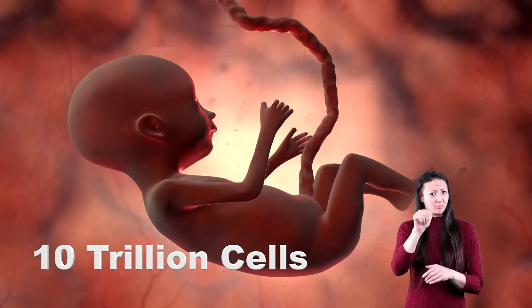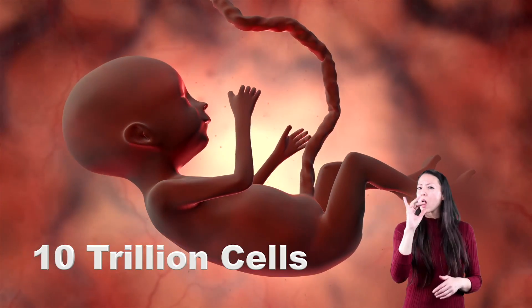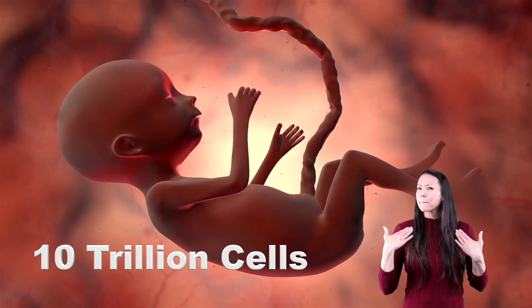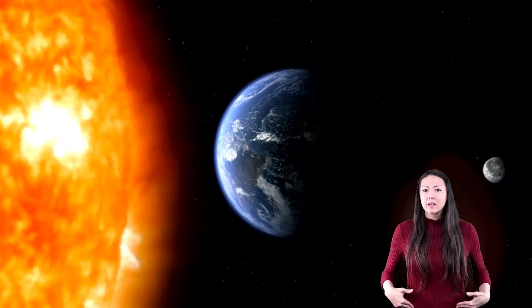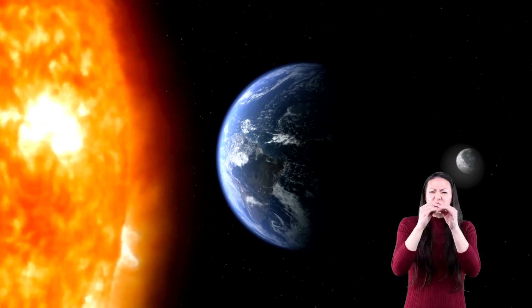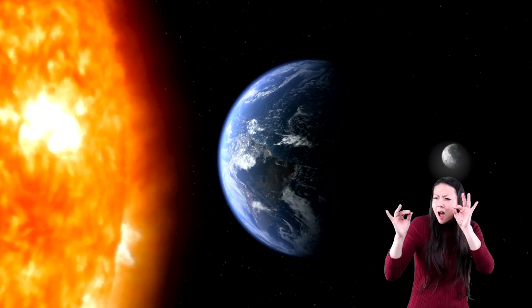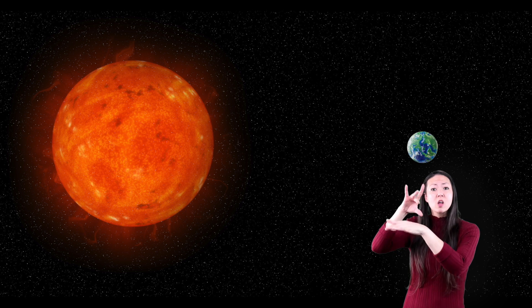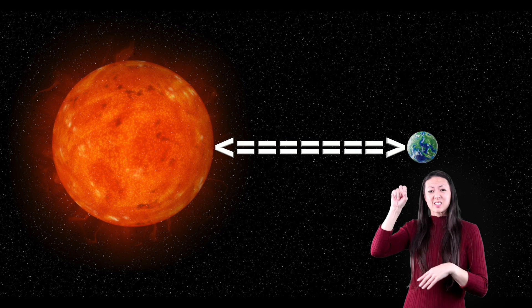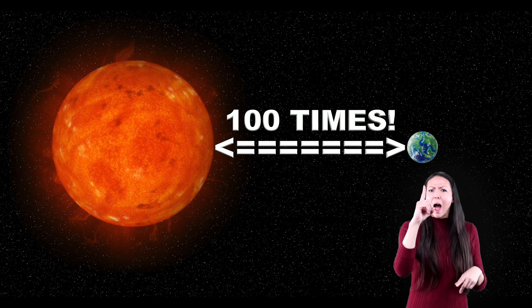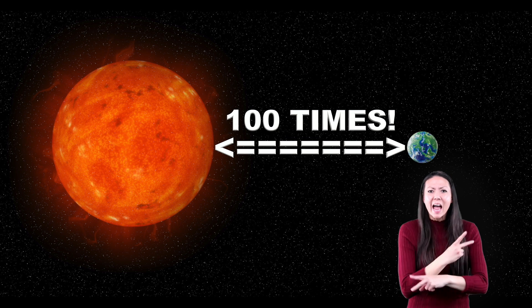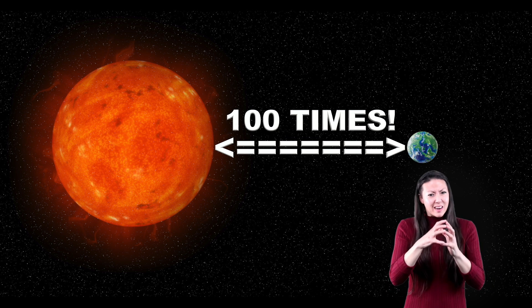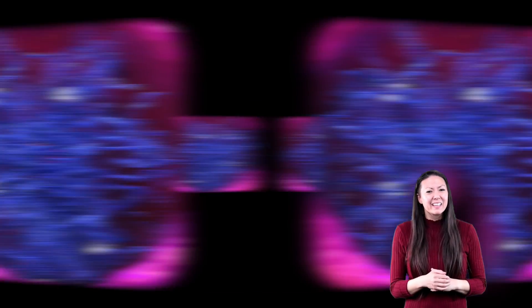You have approximately 10 trillion cells in your body. And if you were to stretch out all your DNA from every cell, it would reach from the Earth to the Sun a hundred times. That is a lot of DNA.